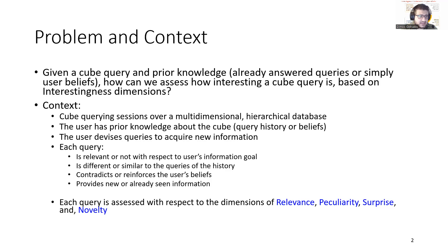The problem we discuss in this paper is: given a cube query and some prior knowledge expressed as already answered queries or simply user beliefs, how can we assess how interesting a cube query is? The context is that we have cube querying sessions over a multi-dimensional hierarchical database. The user has some prior knowledge about the cube, like query history or simply his beliefs, and divides his queries to acquire new information. Each query is assessed with respect to the dimensions of relevance, peculiarity, surprise, and novelty.